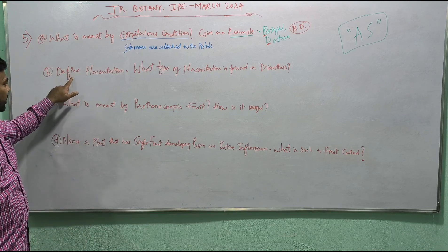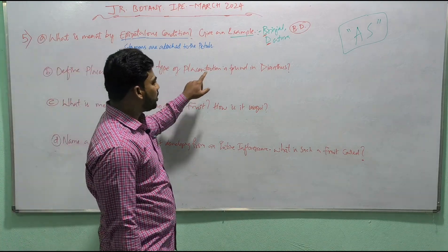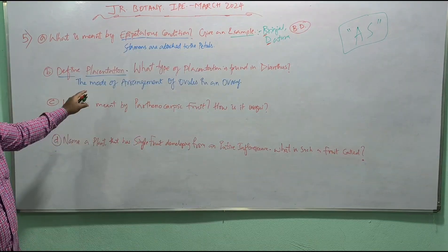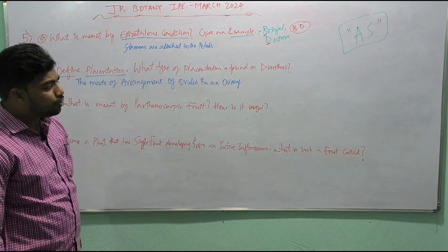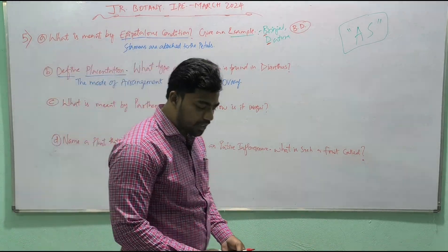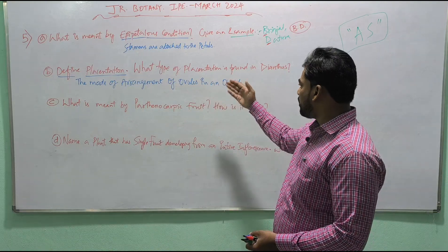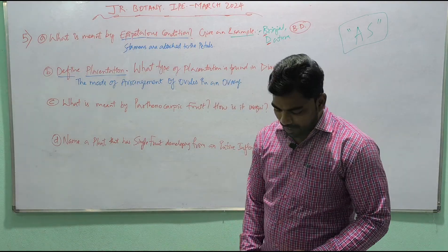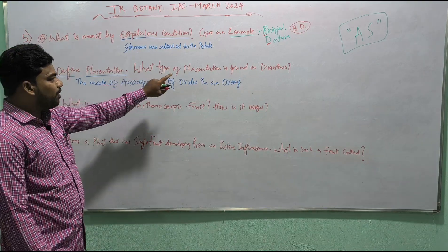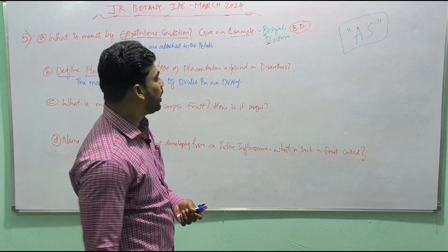Next question: 'Define placentation. What type of placentation is found in Dianthus?' The mode of arrangement of ovules in an ovary of a flower is called placentation. That is the definition of placentation. Now the next part: what type of placentation is found in Dianthus?